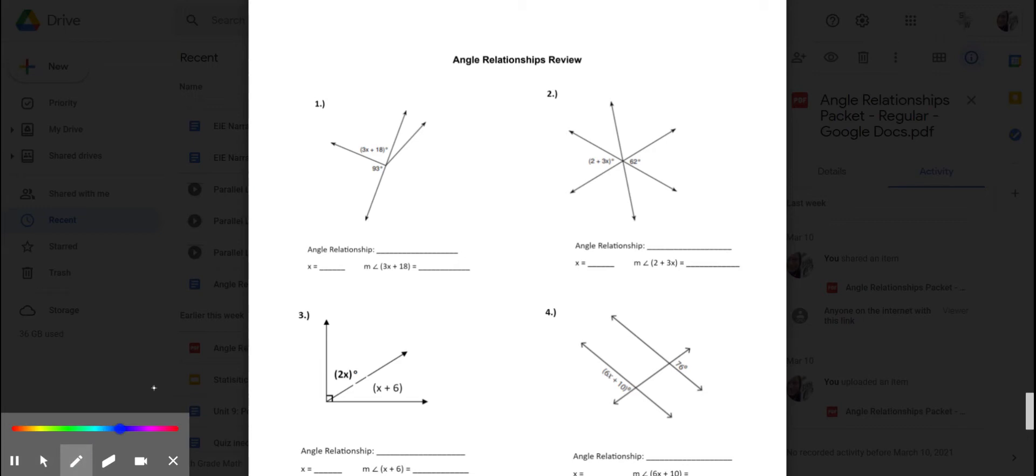So, number 1, it's giving me this diagram, and there's all these rays coming out, but if I look, this right here is a straight line, and this straight line has these two angles on it. It has this 93 degree angle, and then this other angle that says 3x plus 18.